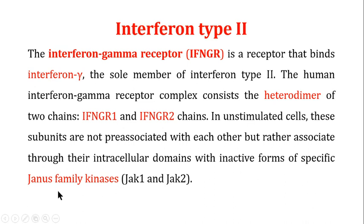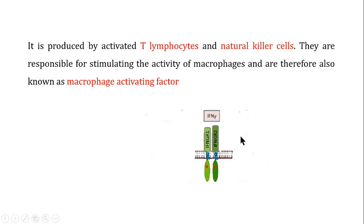When there is no interferon, interferon gamma receptor 1 and interferon gamma receptor 2 are away from each other but are still attached to the inactive form of Janus kinases. Once there is an interferon signal, they combine with each other and the Janus kinases become activated. Interferon gamma is produced by T lymphocytes and natural killer cells and stimulates the activity of macrophages, which is why it is also known as macrophage activating factor.